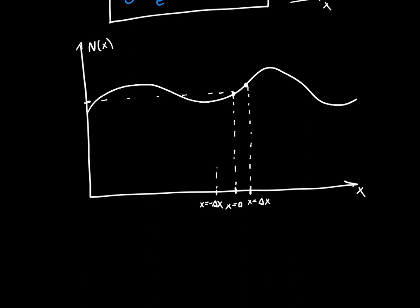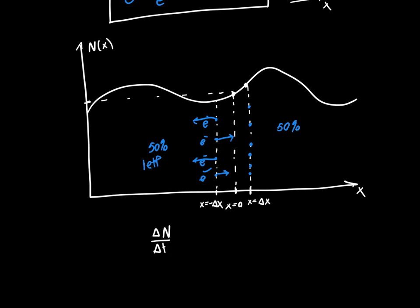We're interested in the diffusion current — the number of electrons passing from left to right in a given period of time. We've got electrons here: four on one side and six on the other. Since these electrons are moving around randomly, and we're only looking at one direction, the electrons are either moving to the left or to the right. In general, we can't say which, but we know on average 50% of any given electrons are going to be moving to the left and 50% to the right.